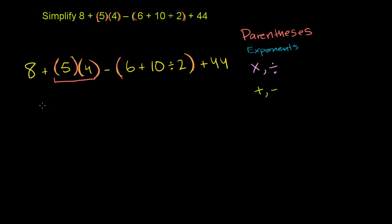So this is going to result in 8 plus, and really when you're evaluating the parentheses, if you evaluate this parentheses, you literally just get 5. And then you evaluate that parentheses, you literally just get 4, and then they're next to each other, so you multiply them. So 5 times 4 is 20 minus,